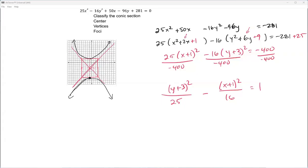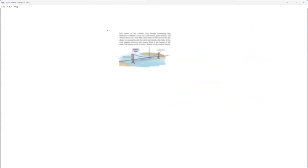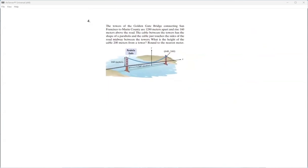Alright, so the towers of the Golden Gate Bridge connecting San Francisco to Marin County are 1,280 meters apart and rise 160 meters above the road. The cable between the towers has the shape of a parabola, and the cable just touches the sides of the road midway between the towers. What is the height of the cable 200 meters from the tower, rounded to the nearest meter?